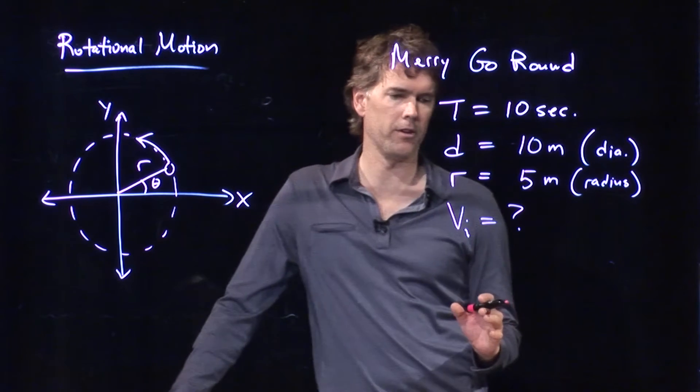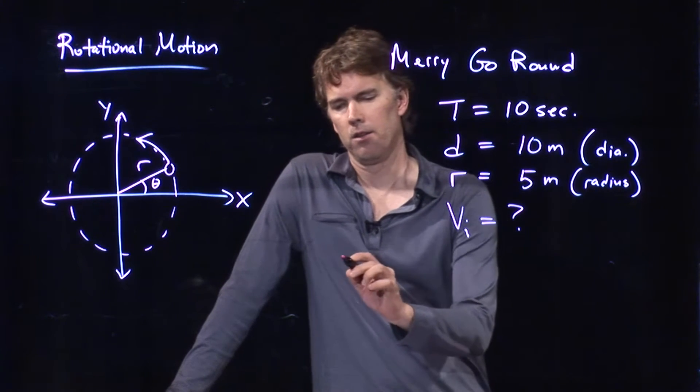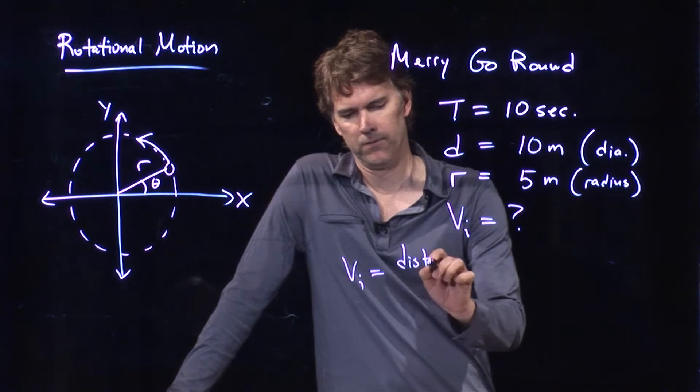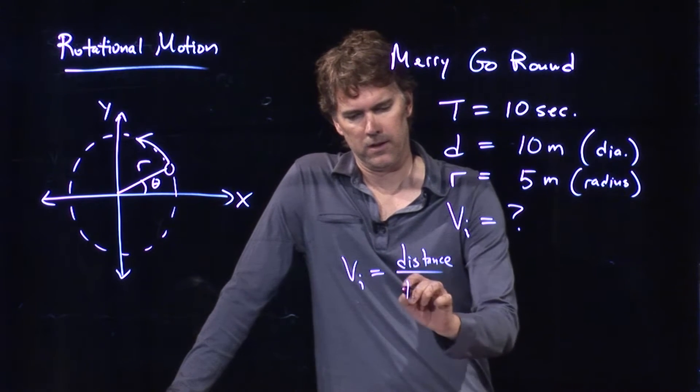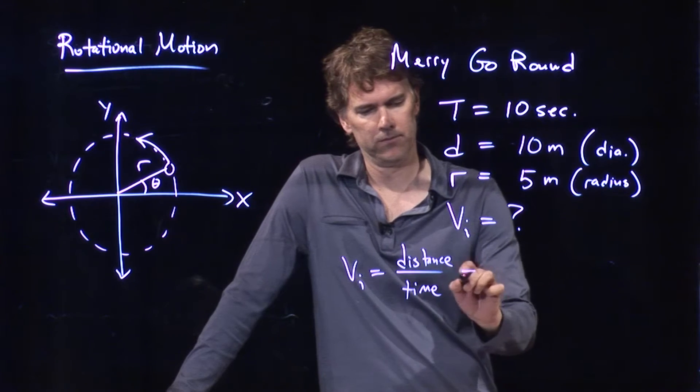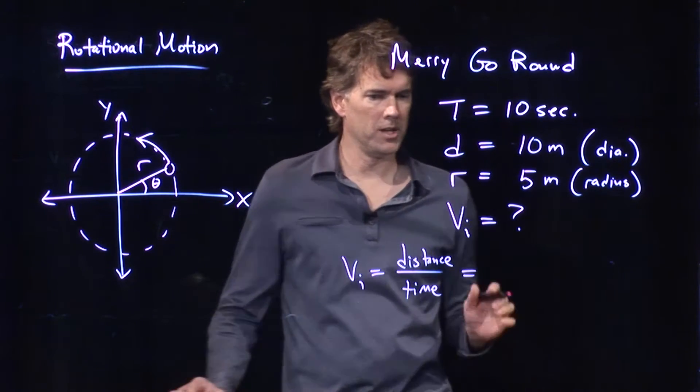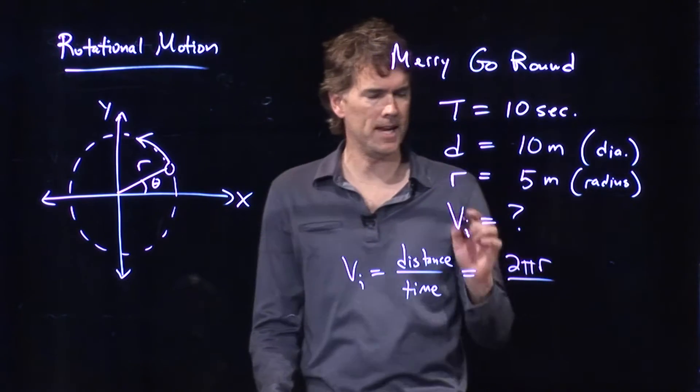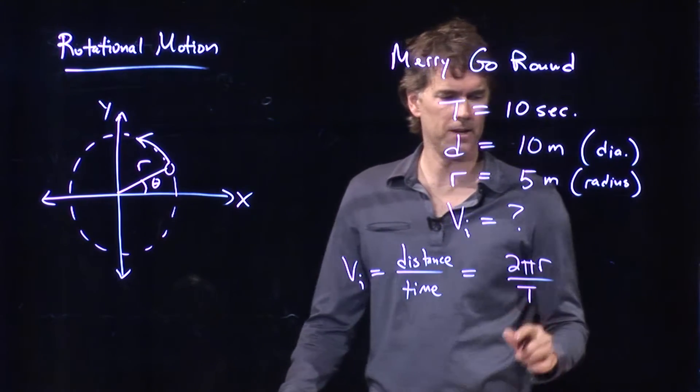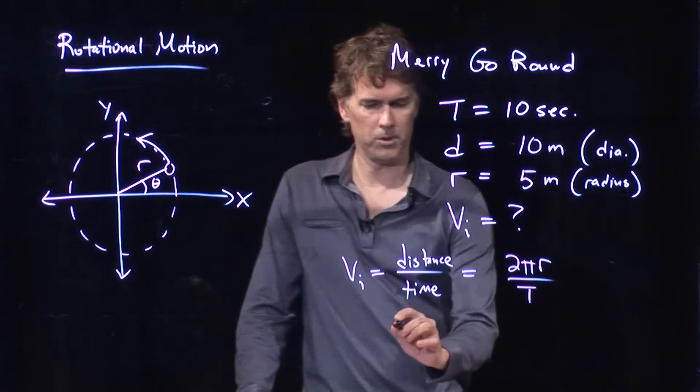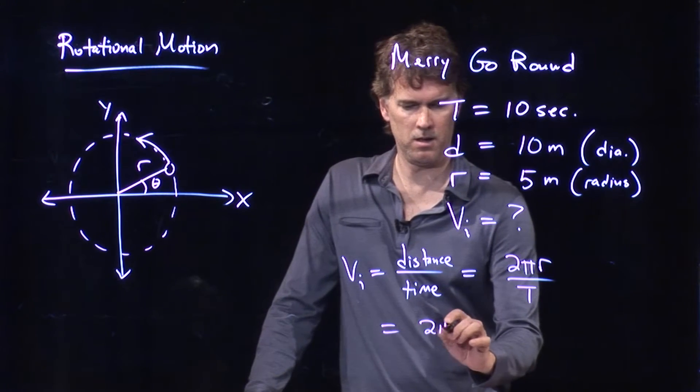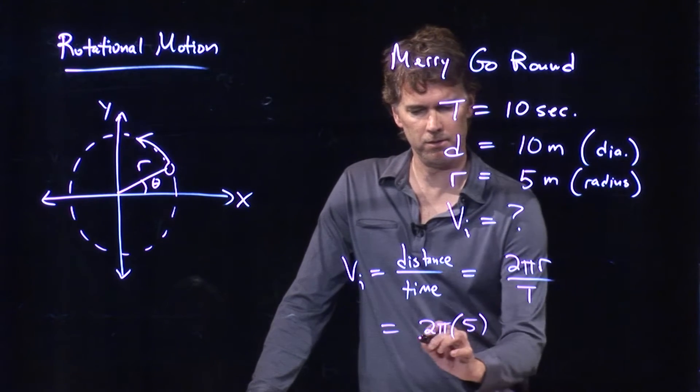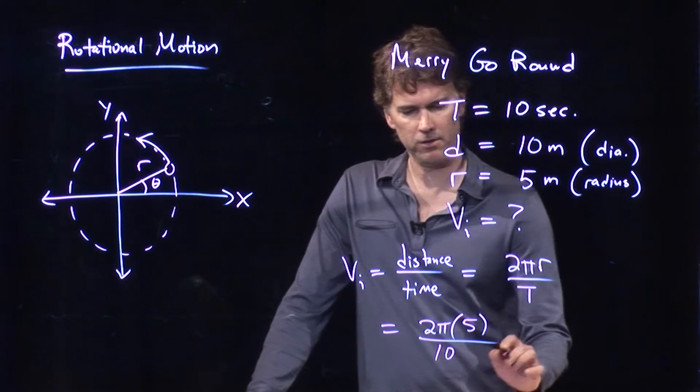Well, we just showed you the formula for that. The initial speed is just how far you go and how long it takes. The distance that we go once around is 2πr. How long it takes is the period T. And so we get 2π times r, we said was 5 meters. T we just said was 10 seconds.